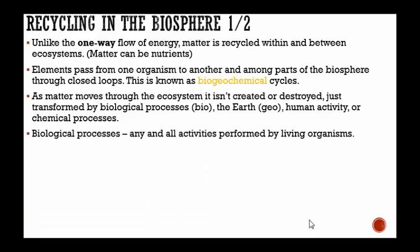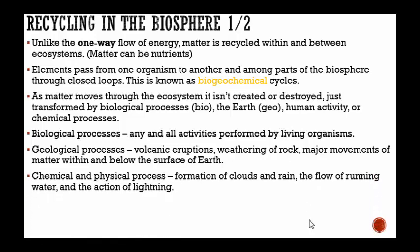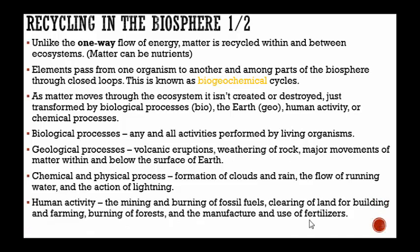When we talk about the biogeochemical cycle, we have 'bio,' which means biological processes — any and all activities performed by living organisms. We're talking about the geochemical cycle: geological processes like volcanic eruptions, weathering of rock, and major movements of matter within and below the surface of the Earth. Geo means Earth, so geological processes include those inside and outside the Earth. Chemical and physical processes include the formation of clouds and rain, the flow of running water, and the action of lightning. We also have human activity: the mining and burning of fossil fuels, clearing of land for building and farming, burning of forests, and the manufacture and use of fertilizers.